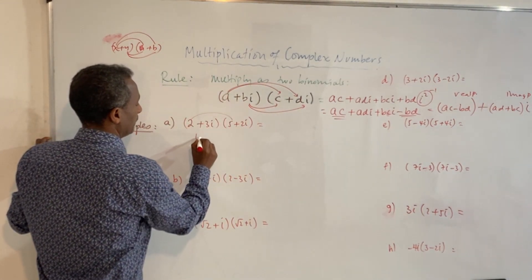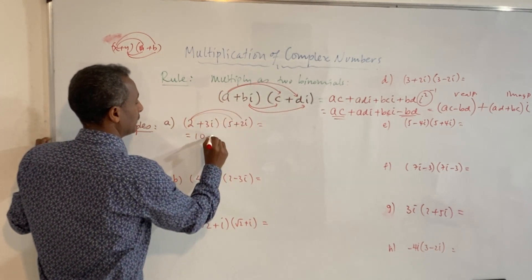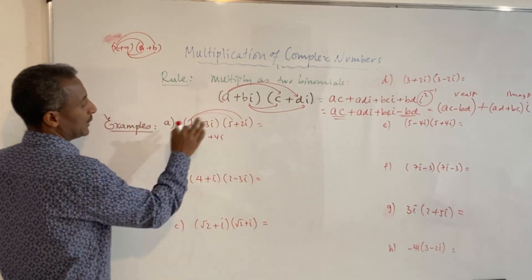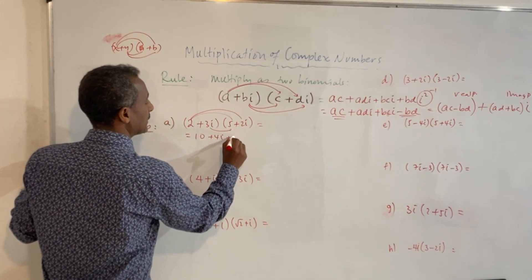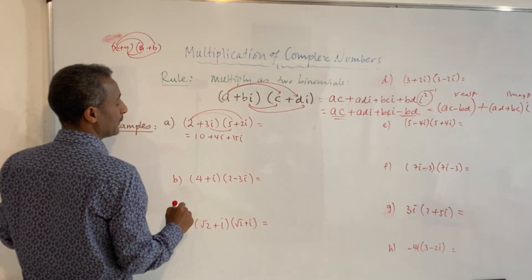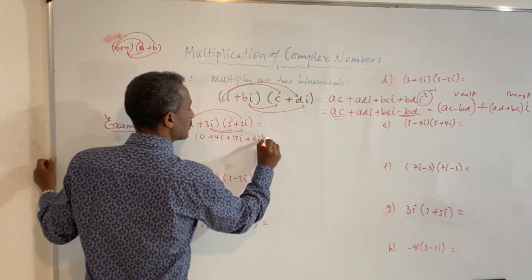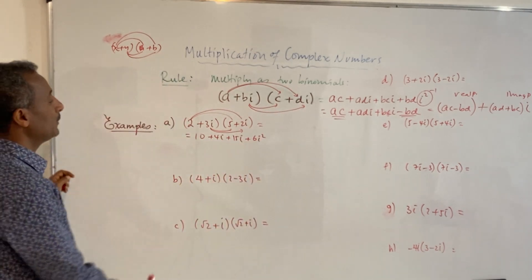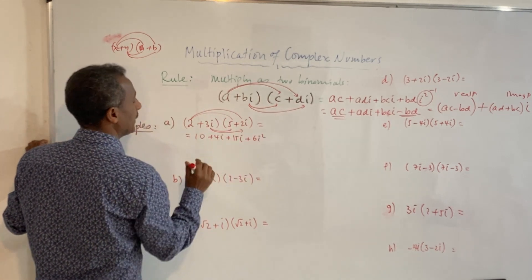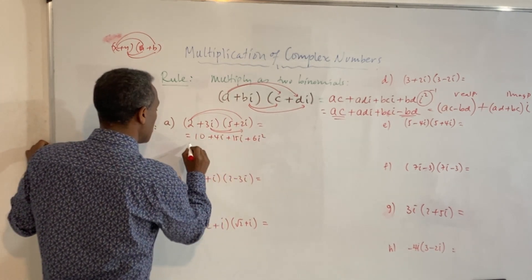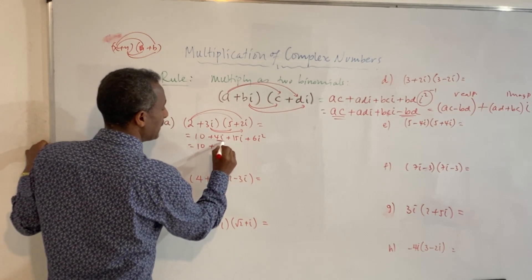Five times two is ten. Two times two is four i. Three times five is fifteen i. Three times two i is six i squared. Ten plus four i plus fifteen i.